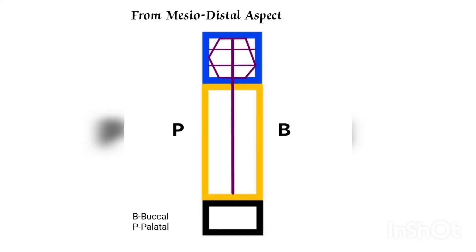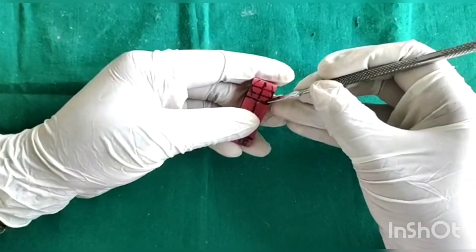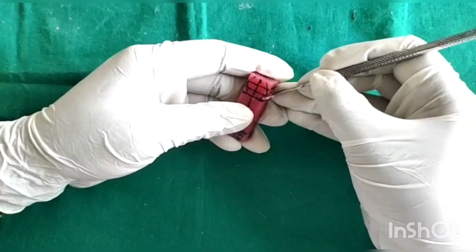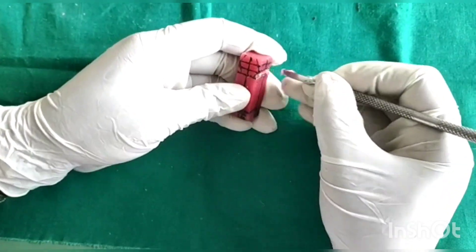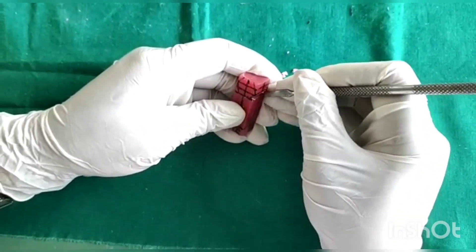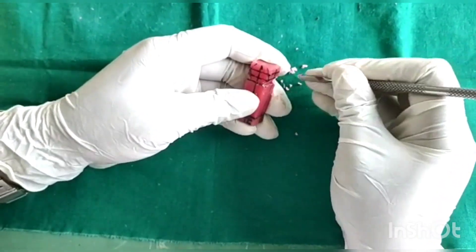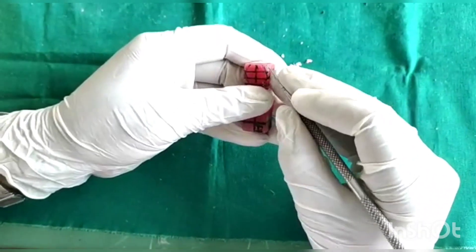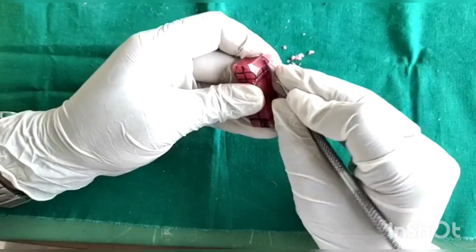From the mesial-distal aspect, the maximum point of contact in the buccal aspect is at the junction between the middle and cervical one-third of the crown. The maximum point of contact in the palatal surface is in the middle third of the crown. To obtain the point of contact on both sides, we should reduce on the occlusal and cervical third of the crown.